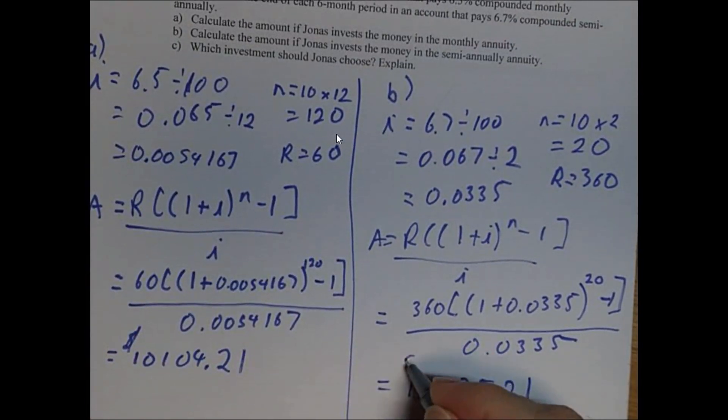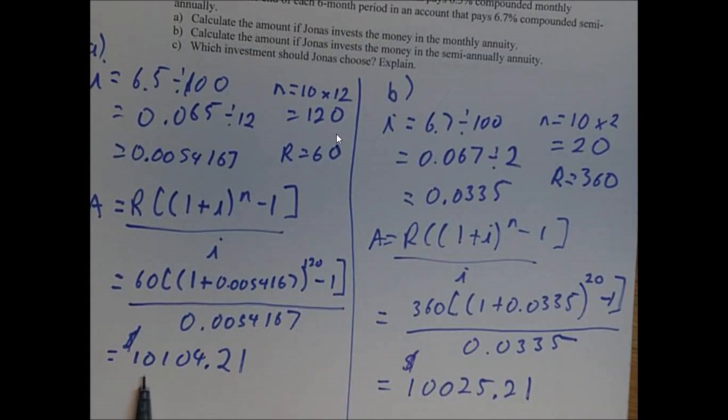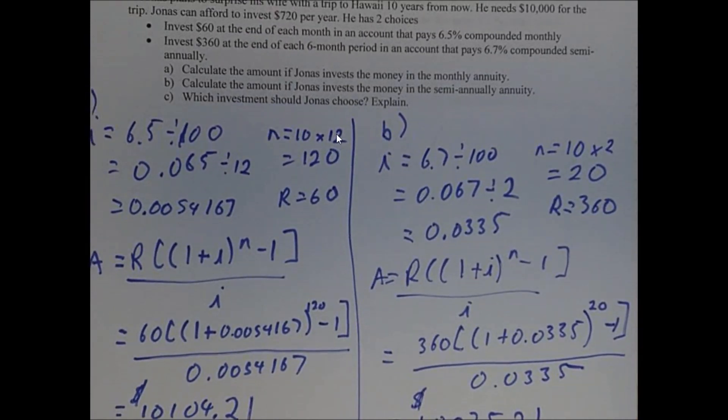So I look at these two numbers. So this one you get 10,104, and this you get 10,025 and 21. Now the endings are the same. Well, look, you get a lot more here. So I would take option A, or I'll take the first option.